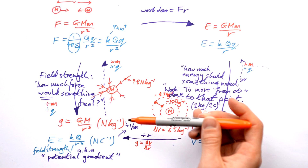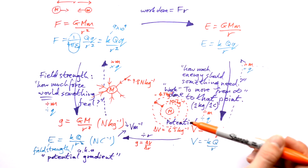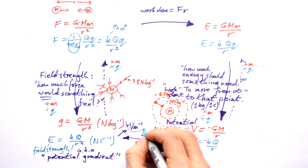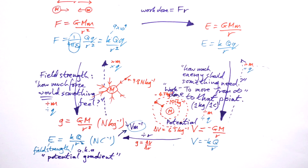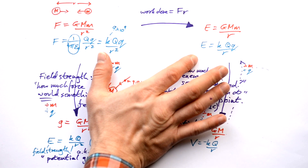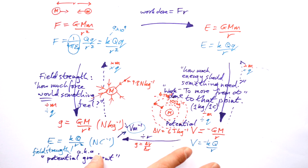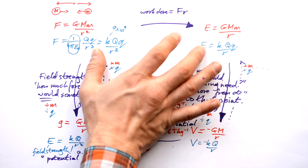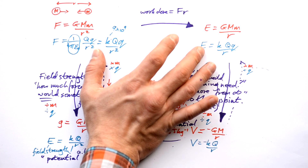Gravitational field strength — also known as acceleration due to gravity — can also be calculated as potential divided by distance. So hopefully you can see how all four things — force, potential energy, potential, and field strength — all link together. Force and potential energy require two masses or two charges. Field strength and potential are about how much force something would feel or how much energy something would need, so they only need one mass or one charge — the one creating the field. To go from field strength or potential to force or energy, just multiply by the second mass or charge.